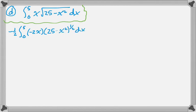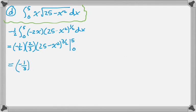And now it's set up perfectly. So what I can do is negative 1/2 and then plus 1 to the exponent. So 1/2 plus 1 is 3/2. So the reciprocal is 2/3. The quantity, 25 minus x squared to the 3/2, and then evaluated at 0 and at 5. So that's going to be negative 1/3, simplifying those fractions. If I plug in 5, I get 25 minus 25, which is 0.